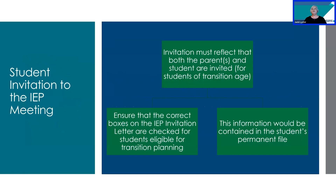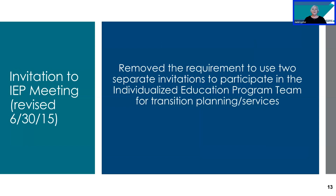Regarding student invitation to the IEP meeting, the invitation must reflect that both the parents and the students were invited — that's for students who are of transition age. You must also ensure that the correct boxes on the IEP invitation letter are checked for students eligible for transition planning, and this information would be contained in the student's permanent file. In 2015, the requirement for a separate invitation sent to the student was removed. Two invitations are no longer necessary — one invitation is all that's needed, but the student must be listed as a participant in the IEP invitation.